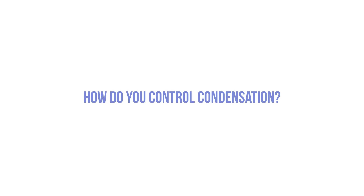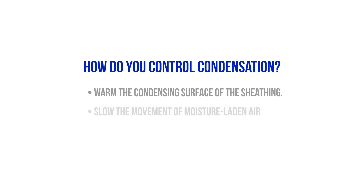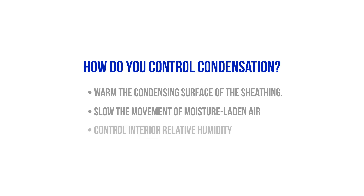So what do we have to do to control condensation? Well, we can either warm the condensing surface of the sheathing, we can slow down the movement of moisture-laden air from coming into contact with a cold surface and let it out when it gets there, or we can control interior relative humidity.